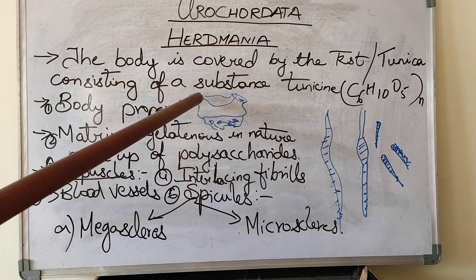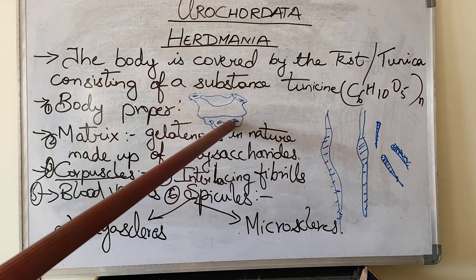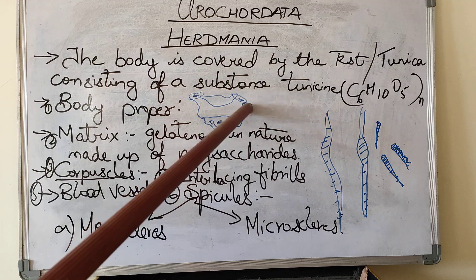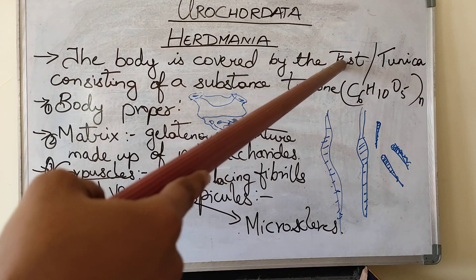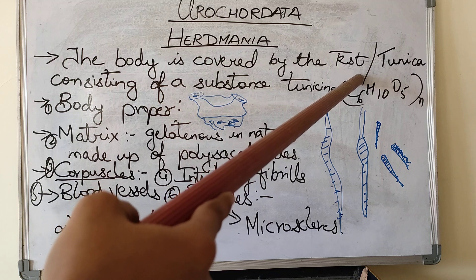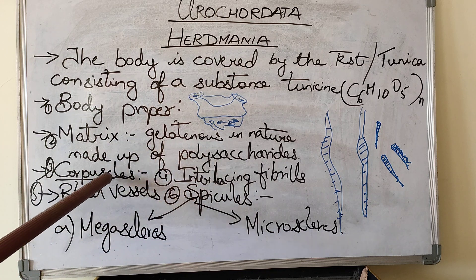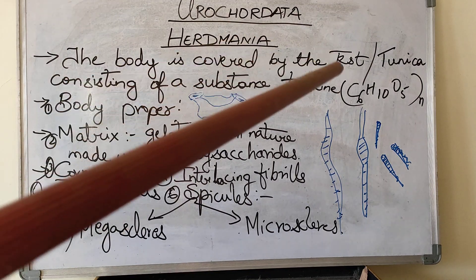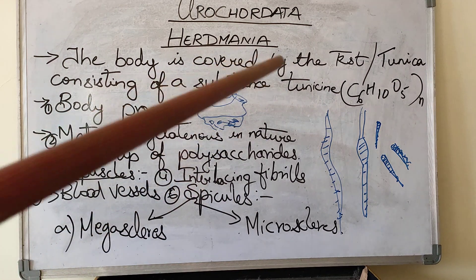In the anterior position there is the branchial aperture and atrial aperture, as I explained previously. The siphon present towards the branchial aperture is called the branchial siphon, and the siphon present on the other side is called the atrial siphon. Now coming to the histology — histologically, the test is a connective tissue which includes matrix, corpuscles, interlacing fibrils, blood vessels, and spicules. The test is the covering which protects the whole body proper.